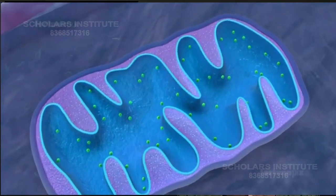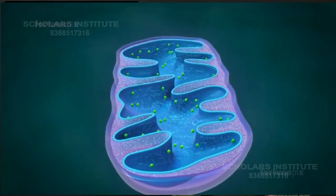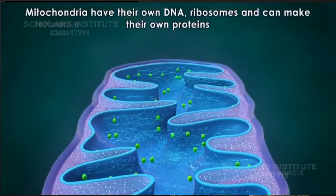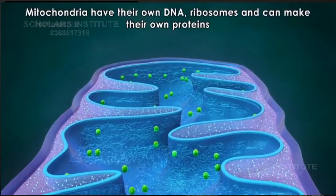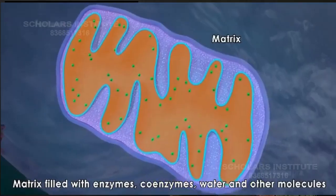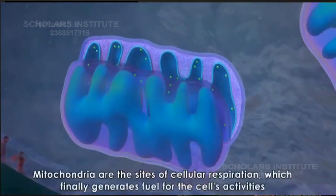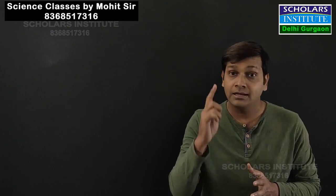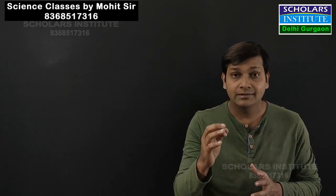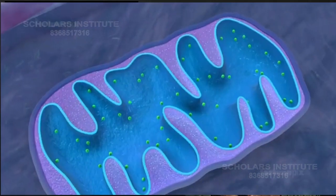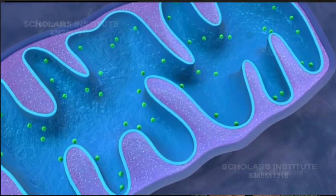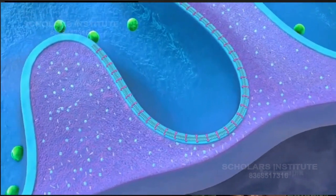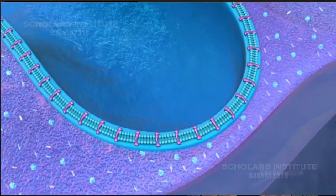Another special feature of mitochondria is that it can make its own DNA — deoxyribonucleic acid. For this reason, mitochondria is also called a semi-autonomous cell organelle. Mitochondria has another special name: it is called the powerhouse of the cell. You can guess why — it is called the powerhouse of the cell because it provides energy to the entire cell, and this is its main function.